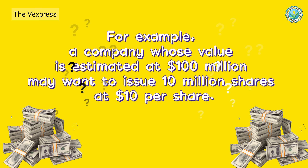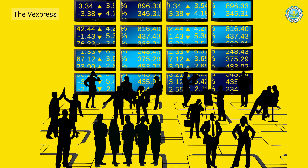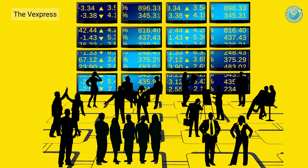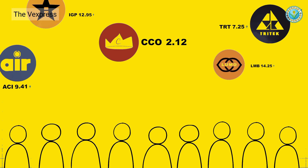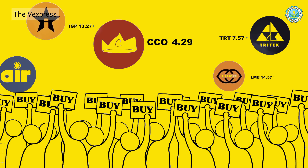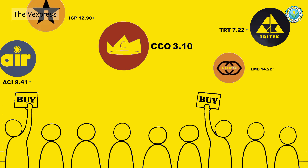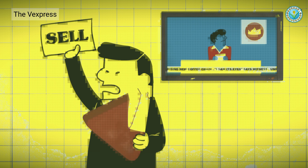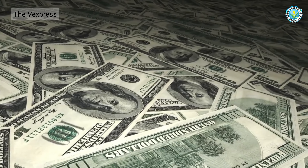For example, a company whose value is estimated at $100 million may want to issue 10 million shares at $10 per share. Once a company goes public and its shares start trading on a stock exchange, its share price is determined by supply and demand in the market. If there is high demand for its shares, the price will increase. If the company's future growth potential looks dubious, sellers of the stock can drive down its price. Market price shows only how much the market is willing to pay for its shares, not how much it is actually worth.